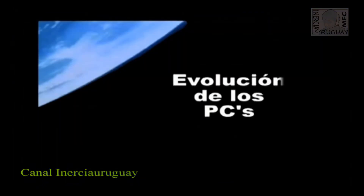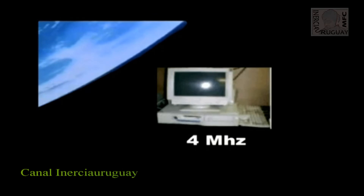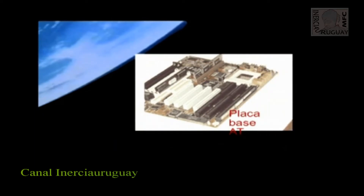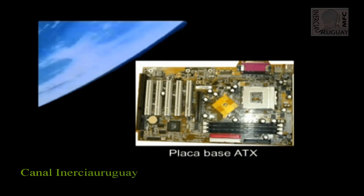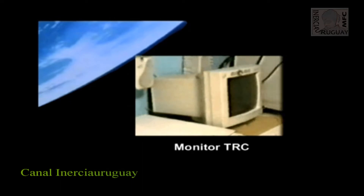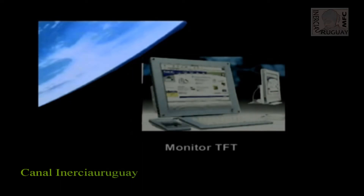Evolución de los PCs. La evolución de los PCs ha sido fantástica. En tan solo 20 años se ha dado un salto de gigante. Basta comparar el primer ordenador IBM, que trabajaba a tan solo 4 MHz, con los ordenadores de última generación que alcanzan los 3.200 MHz o 3,06 GHz. Pero esta evolución no se ha limitado a los microprocesadores, sino que se ha experimentado en el resto de los componentes del ordenador, tales como placas base, chipsets, memorias, etc. Lo mismo cabe decir de los periféricos. Basta comparar los antiguos monitores TRC con los modernos monitores TFT.